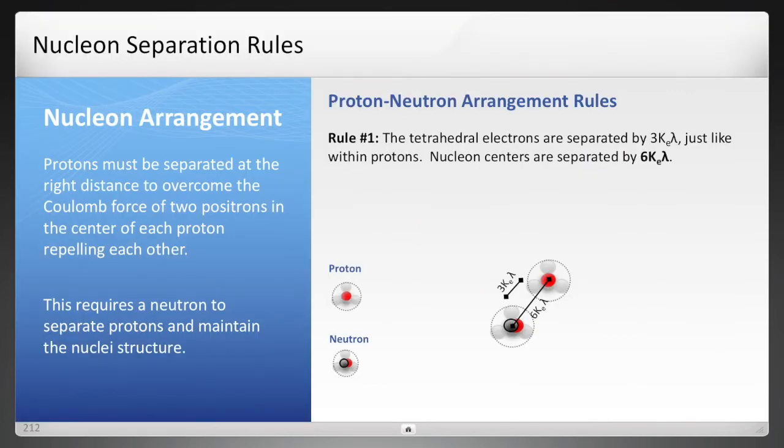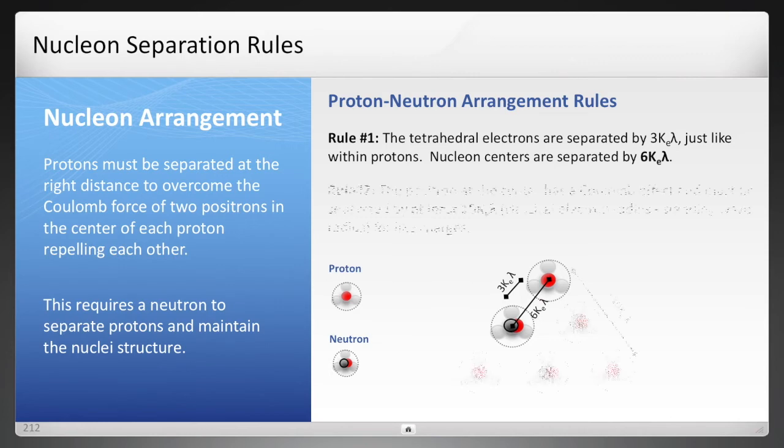I mentioned the separation rules earlier. A proton and a neutron would be separated at stable wavelength nodes. Again, that's a fundamental rule for all of this, and so it has been estimated how far apart they would be and what that force would be using the force equation for the strong force. Protons also require separation as well. This is where the neutron would separate the protons, and this has also been calculated using that same equation.